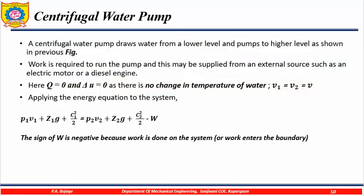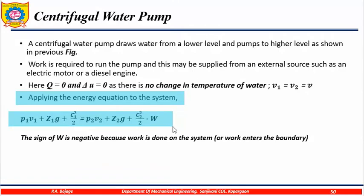After applying the steady flow energy equation, you can get this equation: P1V1 plus Z1g plus C1 squared upon 2 equals—now here Q is taken as zero, we have cancelled it...